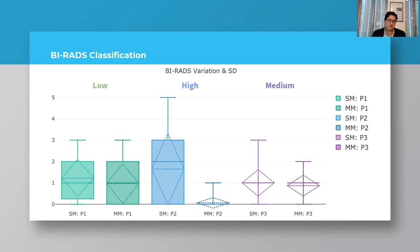So, on the left of each color, we have green, blue, and purple. On the left, we have the single modality results, and on the right, we have the multimodality. For low, green. For high, blue. And medium, purple.